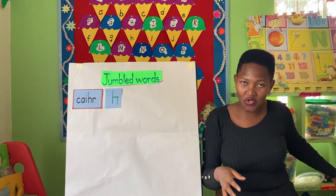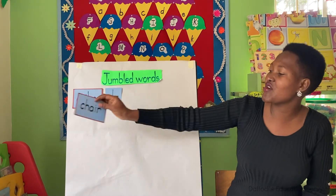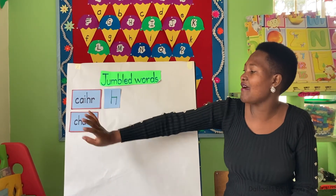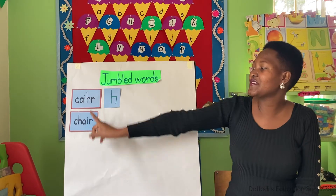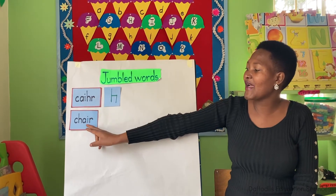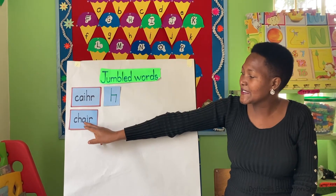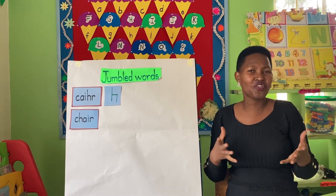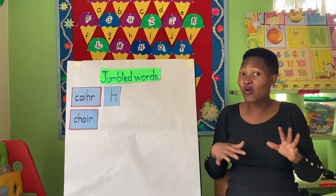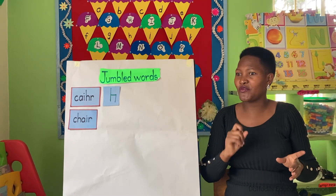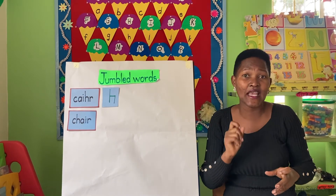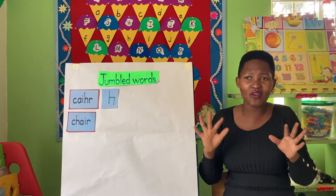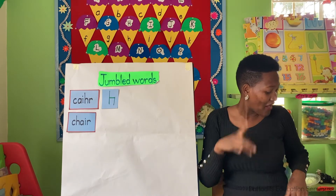Our job, we as the children, is to write them correctly. So this is a jumbled word and the correct word is chair. Usually teacher just wants to trick you — they're not hard — but teacher wants to see if you're very smart and if you can easily tell. Teacher is trying to trick you to see if you can really write the correct word.